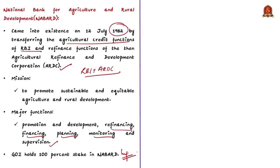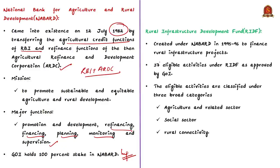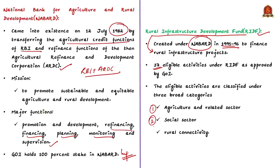Let us see what are the existing schemes and funds regarding agriculture and rural development. Later, we will talk about the proposed reforms under Atmanirbhar Bharat Abhiyan or Self-Reliant India Mission. Here comes the Rural Infrastructure Development Fund. This fund was created by Union Government under NABARD in 1995-96 to finance rural infrastructure projects. At present, there are around 37 eligible activities under RIDF as approved by government. These activities are classified under three broad categories: Agriculture and Related Sector, Social Sector and Rural Connectivity.